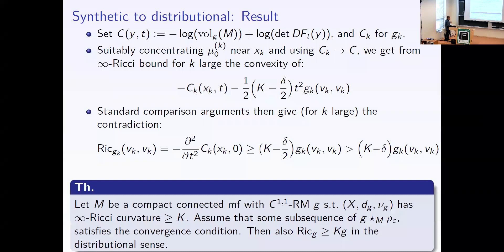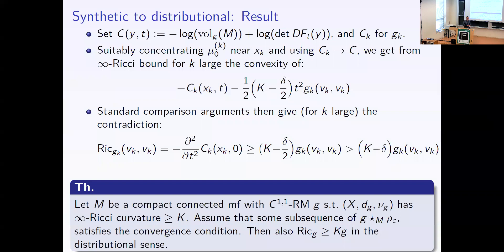The conclusion: if you have a compact connected C^{1,1} Riemannian manifold with the synthetic ∞-Ricci curvature bound by k, and the additional convergence condition on the derivatives of the exponential maps, then you also have a distributional lower Ricci curvature bound by the same k.